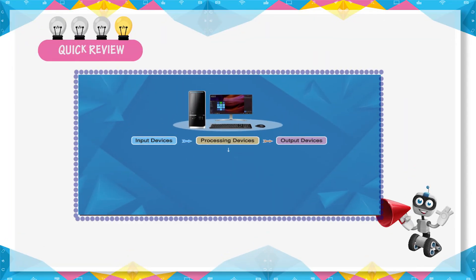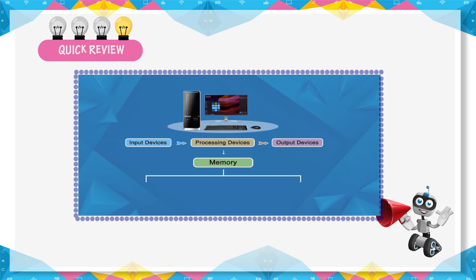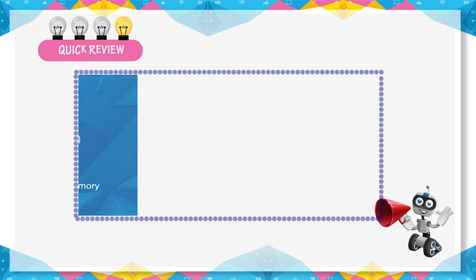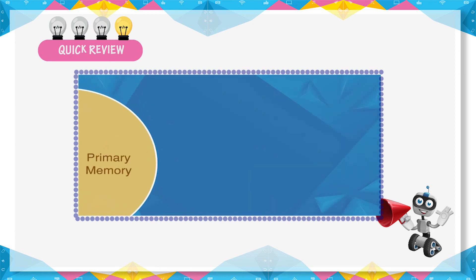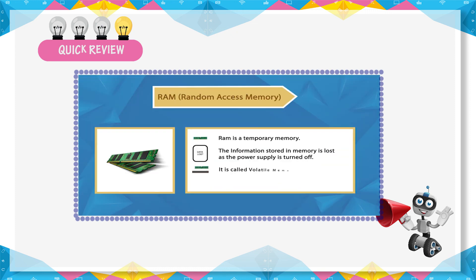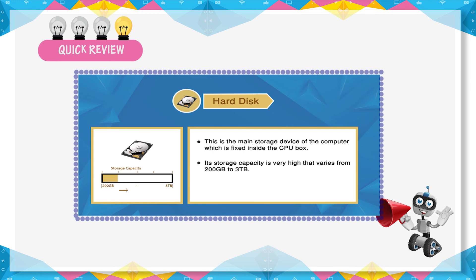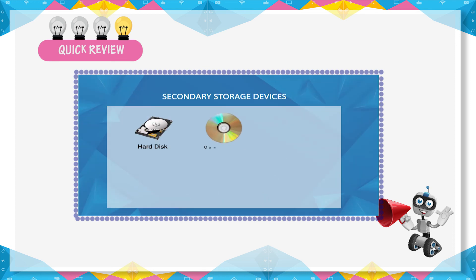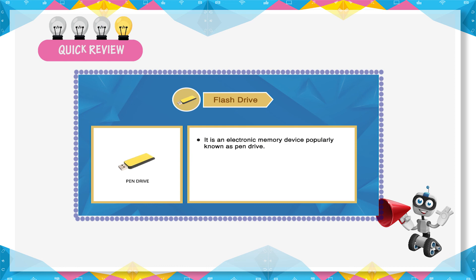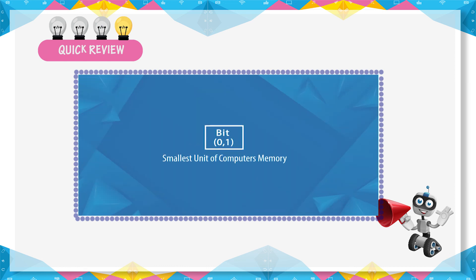Quick review: The storage area where data is stored in a computer is called memory. Memory is of two types: primary memory and secondary memory. Primary memory has two types: RAM and ROM. Random Access Memory is volatile memory. Secondary storage devices are used to store information permanently. A hard disk's storage capacity is much greater than a compact disk. CD, DVD, and Blu-ray disk are portable devices. Flash drive is also called a pen drive. 1 bit, either 0 or 1, is the smallest unit of computer memory.